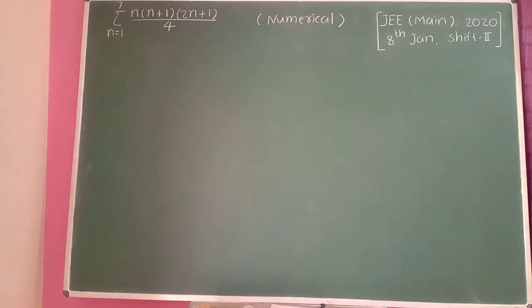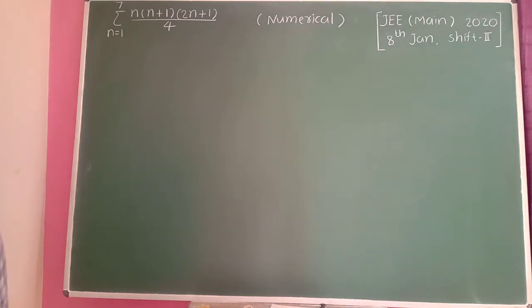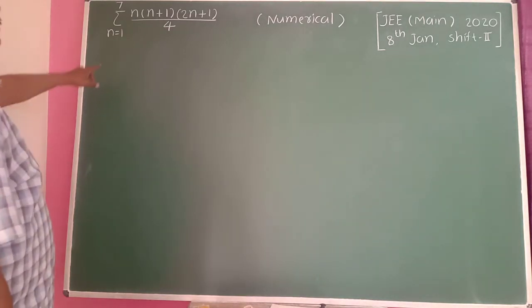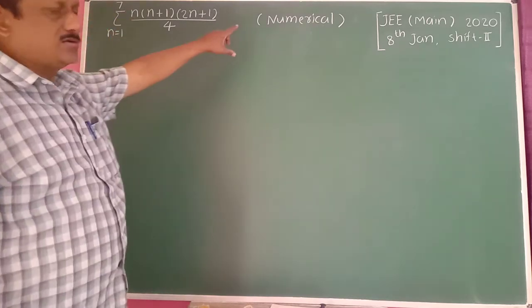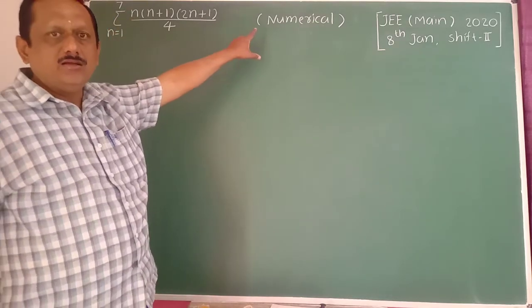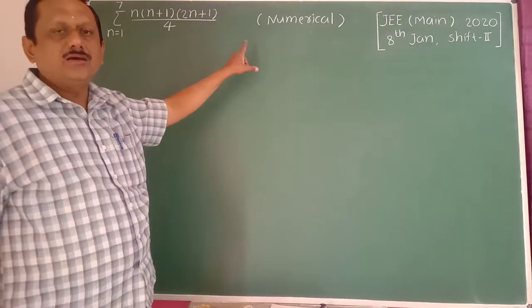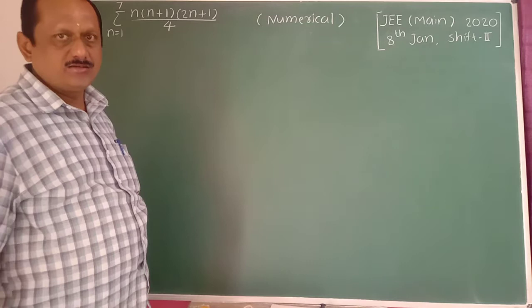Next: find the summation of n times n plus 1 times 2n plus 1, divided by 4, for n equal to 1 to 7. This is a numerical question with no multiple choice options.